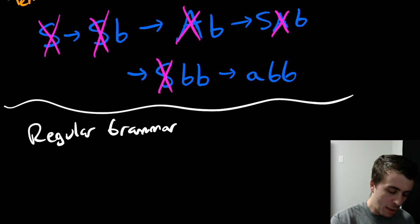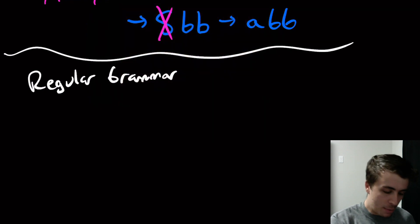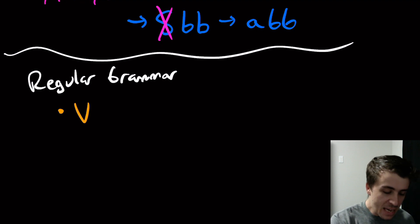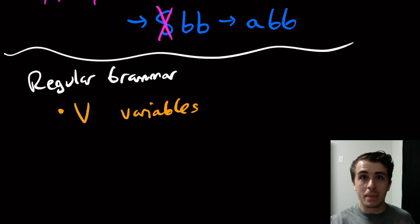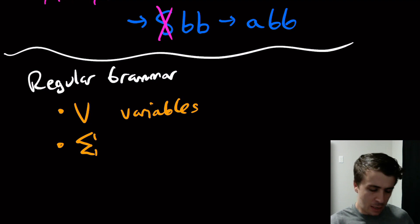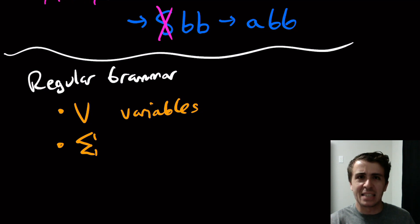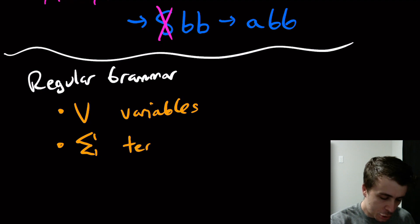So what is a regular grammar? We have a set V of variables. We also have an alphabet Σ which is going to be the terminals. This Σ is very similar to the Σ we saw for DFAs and NFAs — it takes the same role, it's just called terminals here.